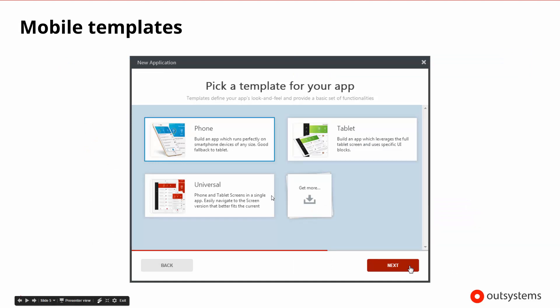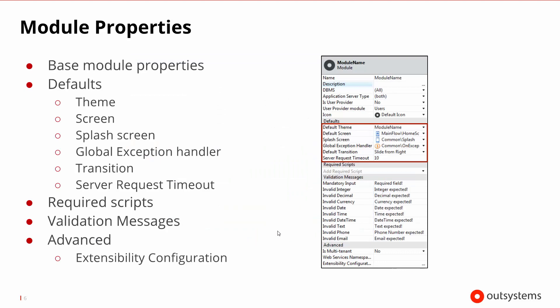As we begin creating new applications, one of the things that will happen is it will ask you to select a template for your app. If you choose a mobile application, it will ask whether you want a phone, a tablet, or a universal template, and it will go ahead and define that as the theme it's going to use from that point forward.